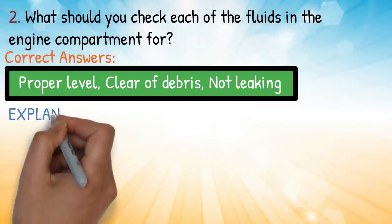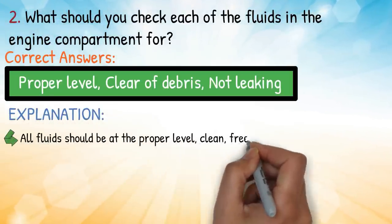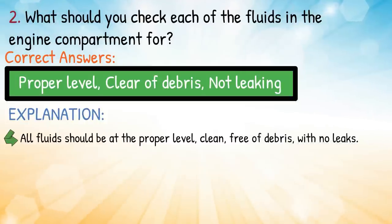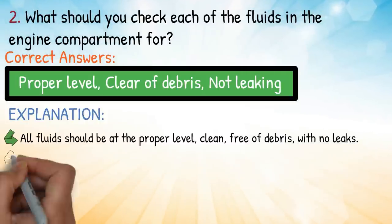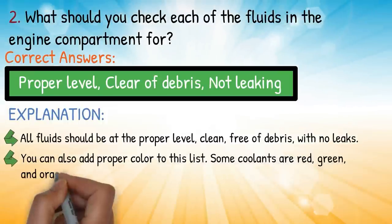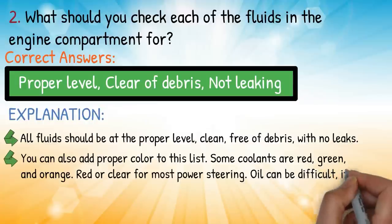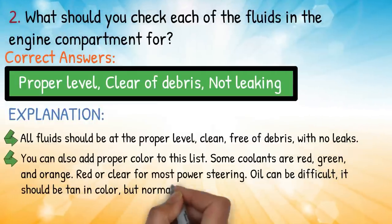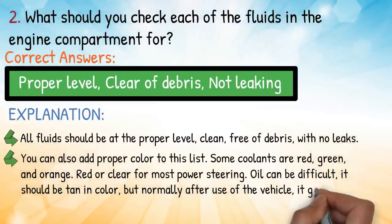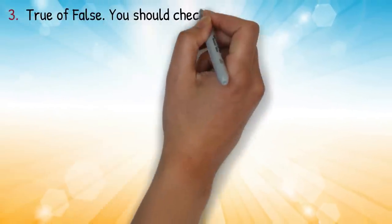Explanation: all fluids should be at the proper level, clean, and free of debris with no leaks. You can also check for proper color — some coolants are red, green, and orange; red or clear for most power steering oil, which should be tan in color but normally gets black after use of the vehicle.